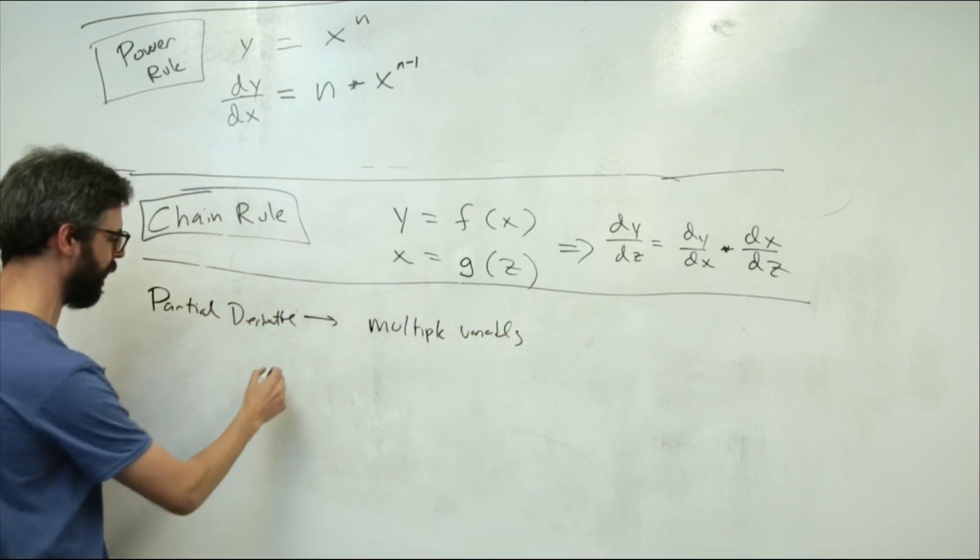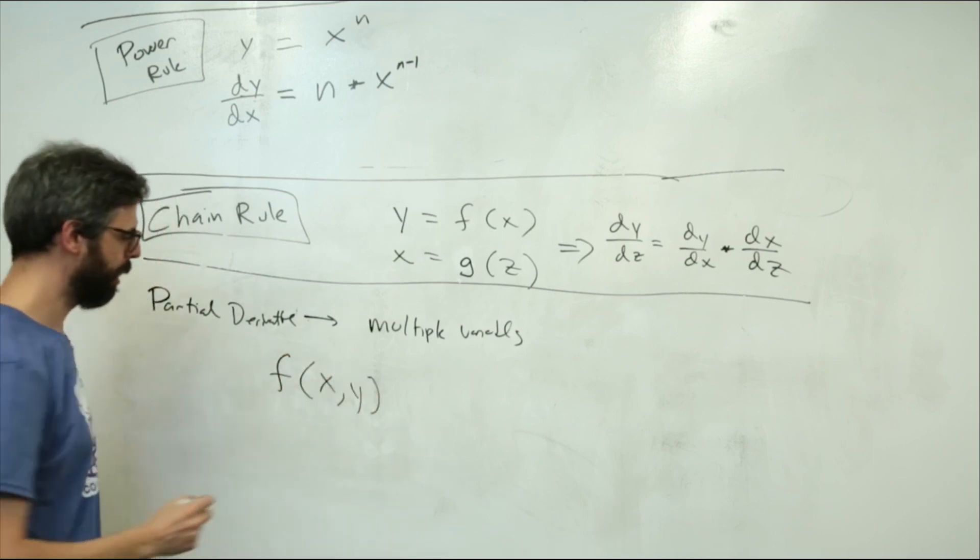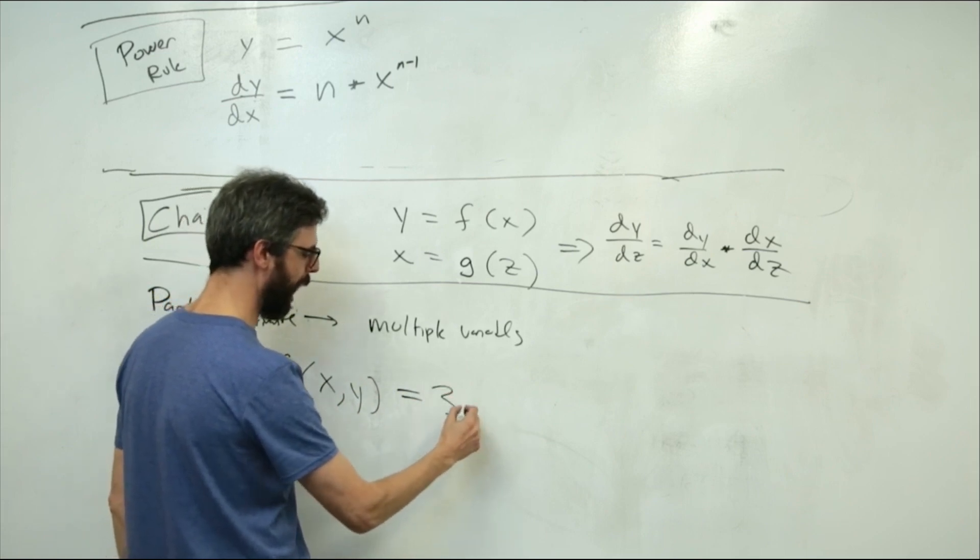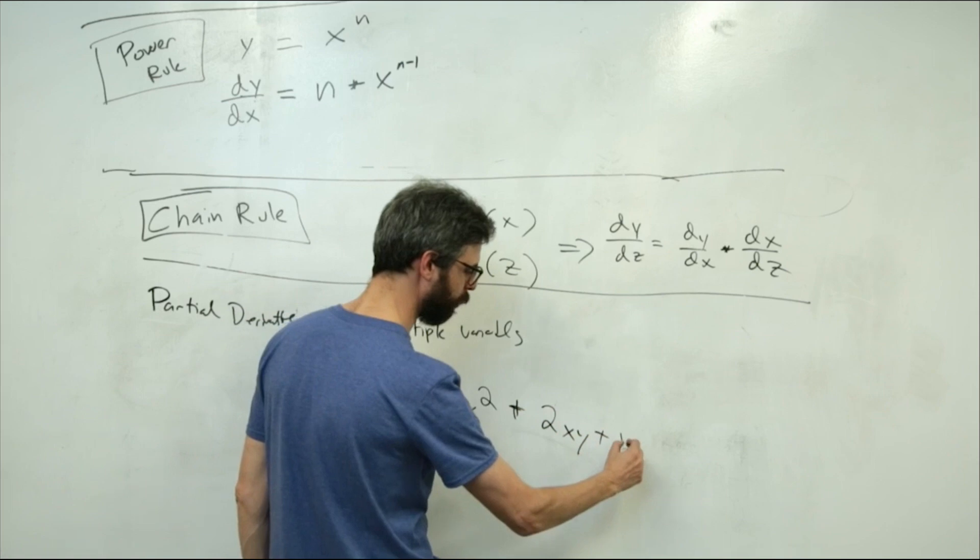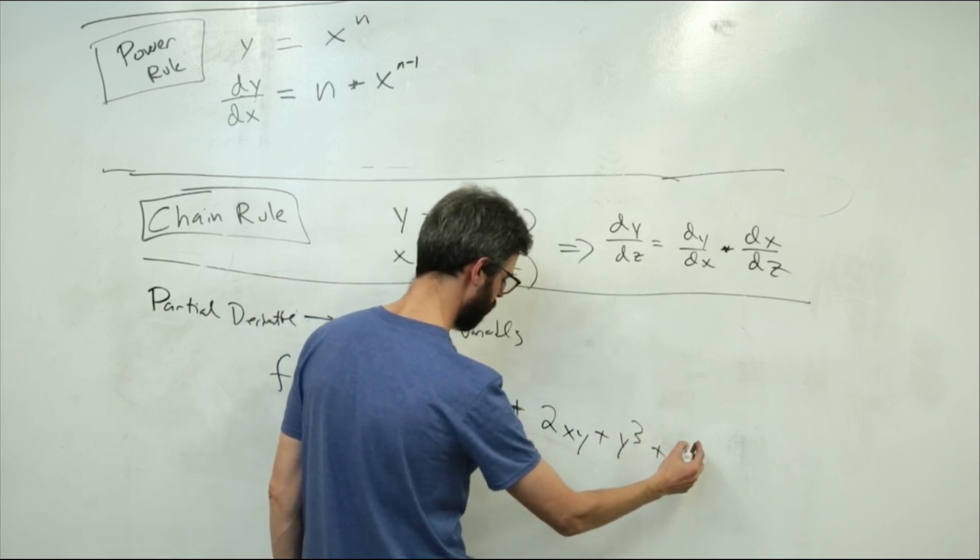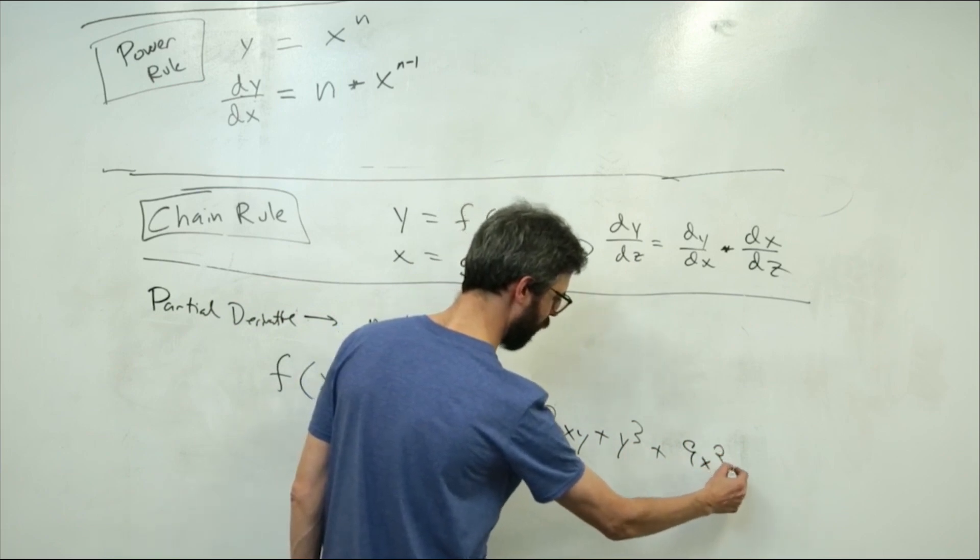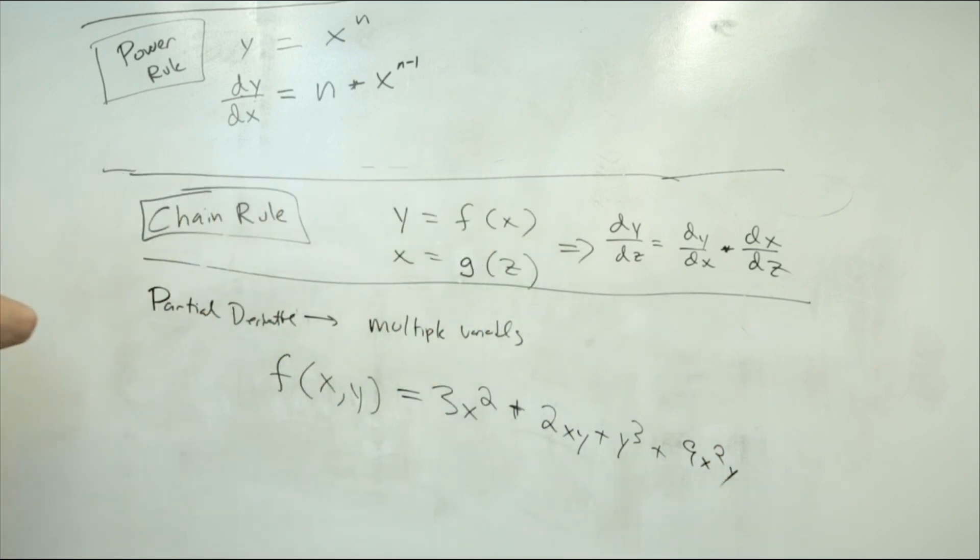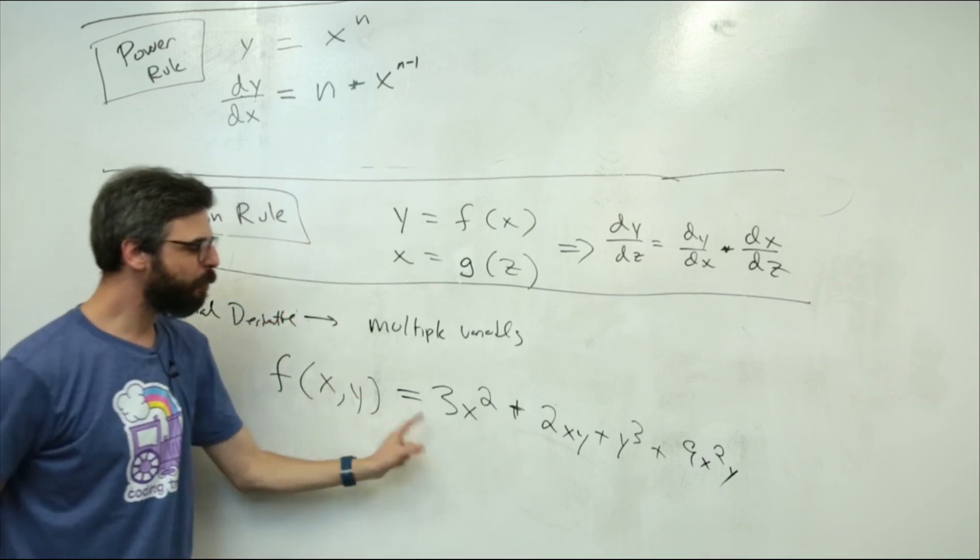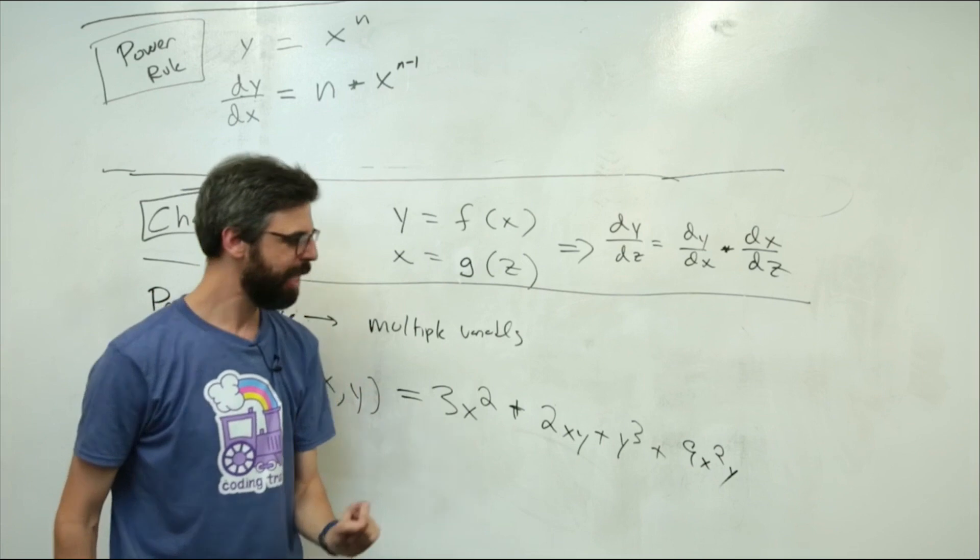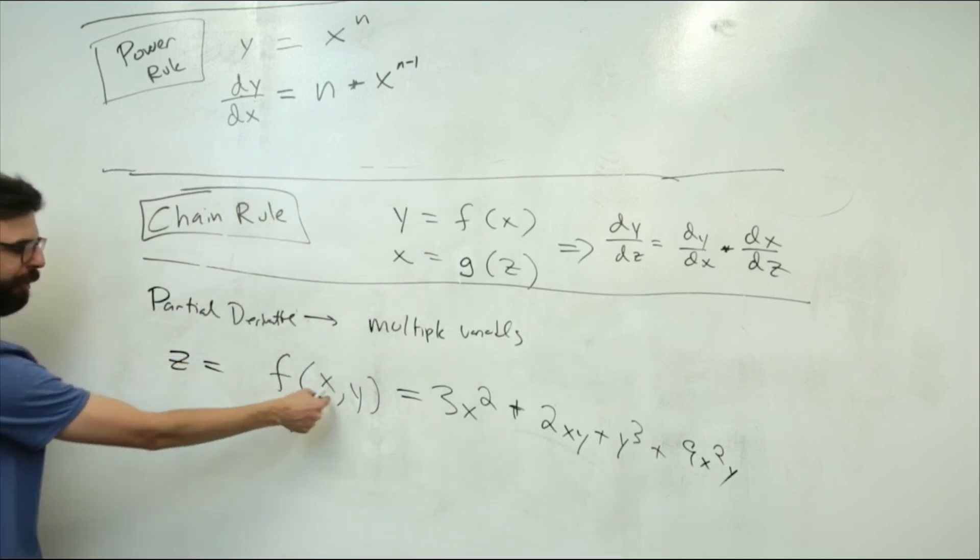What if, in many cases, you have a function with multiple variables. So I could say I have a function f of x and y. And it equals 3x squared plus 2xy plus y to the third power plus 9x squared y. So this is some crazy function that I wrote. I don't know what the use point of it is. But what if what I want to do is look at, and let's say this is z. z is a function of x and y.